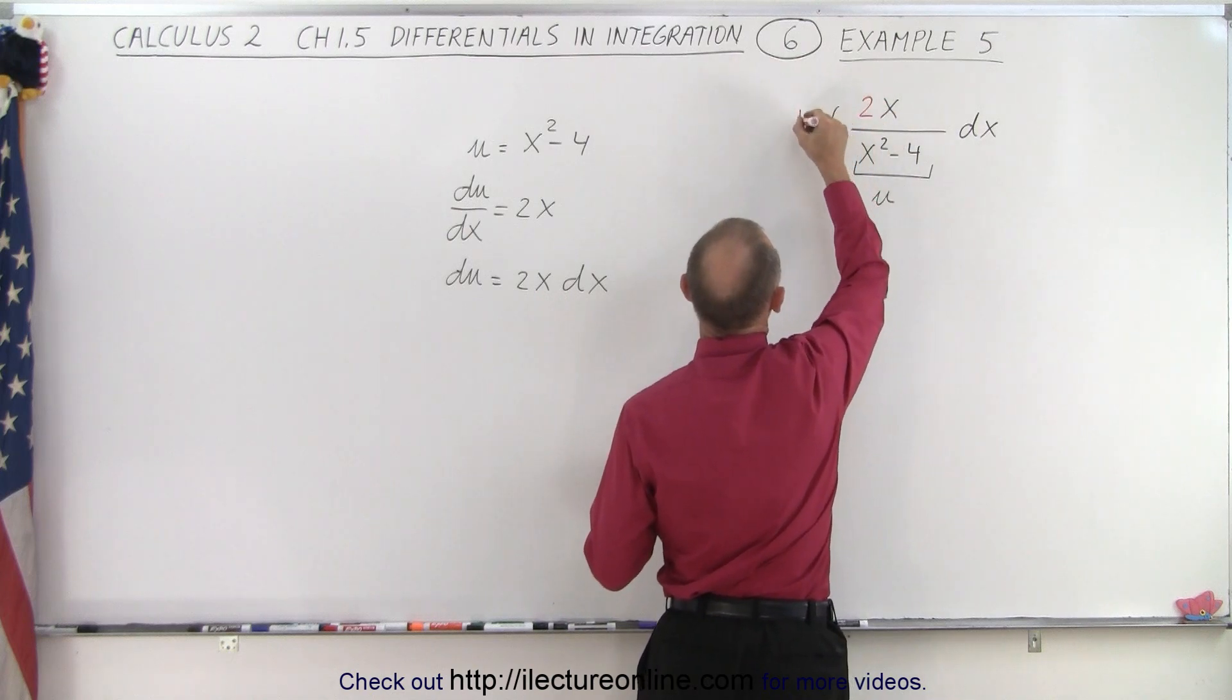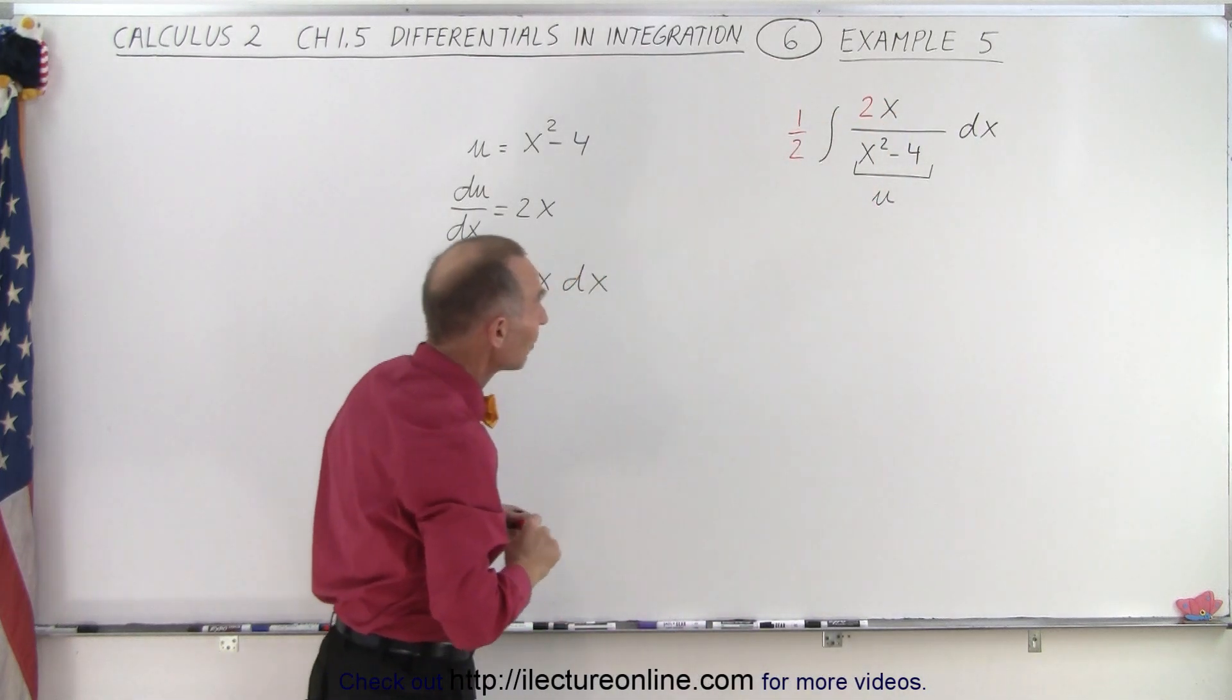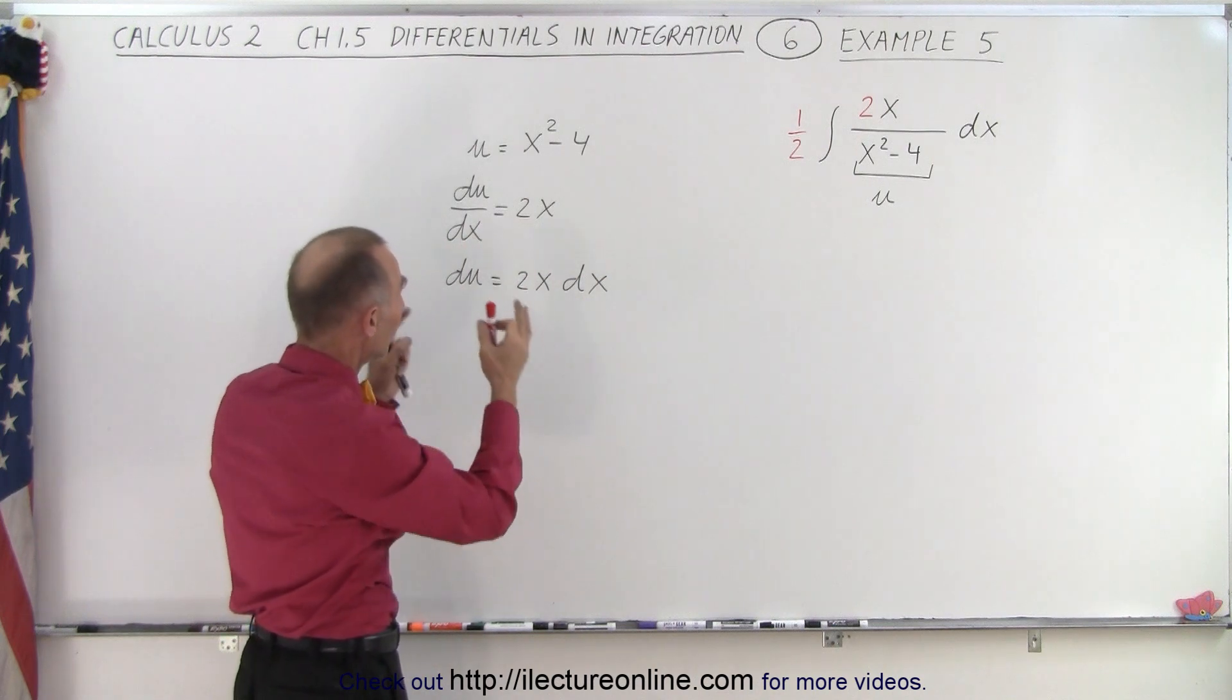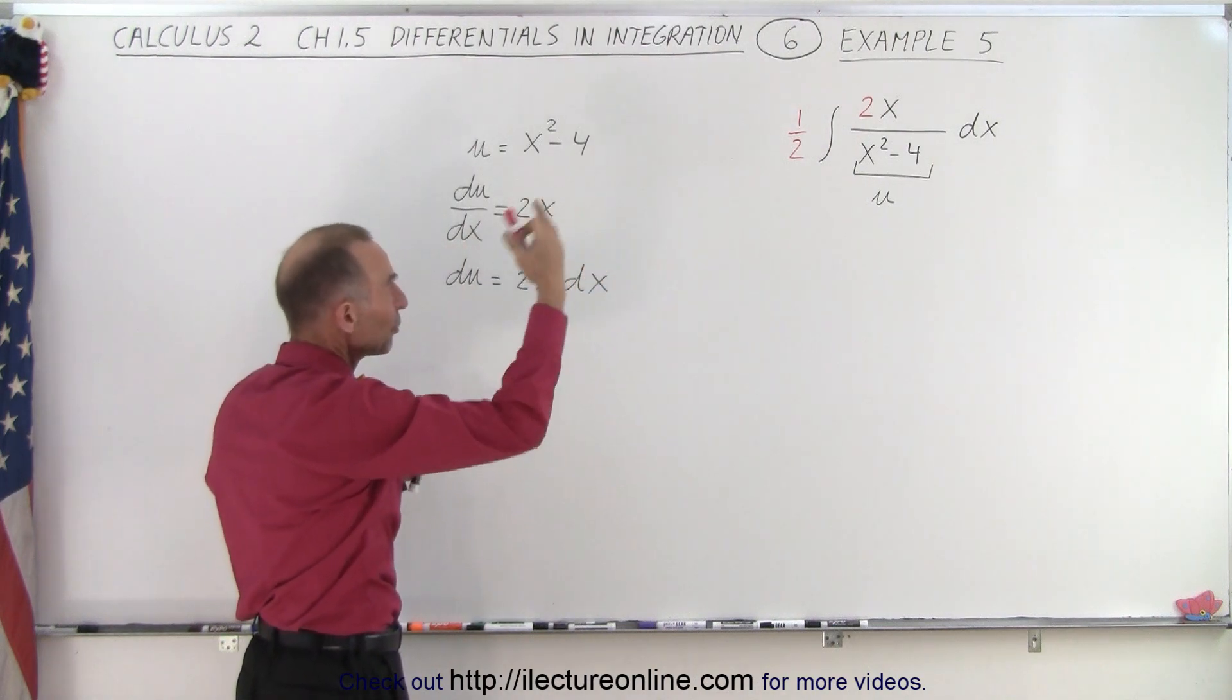And of course, I also have to divide by 2, multiply by a half. And now notice that 2x dx is a du in the numerator, and I have a u in the denominator.